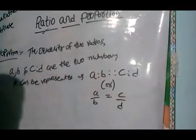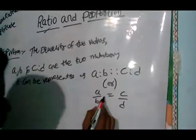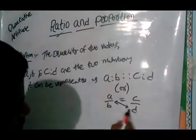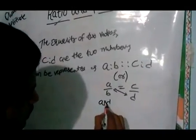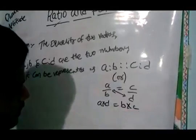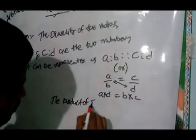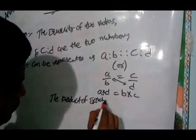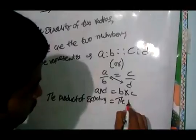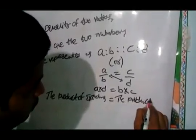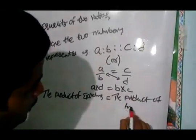If we have cross multiplication of this, that means a into d is equal to b into c. Here a into d - the product of extremes will equal to the product of middle terms.